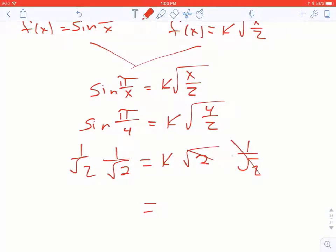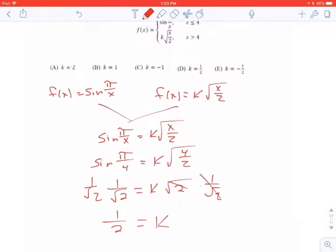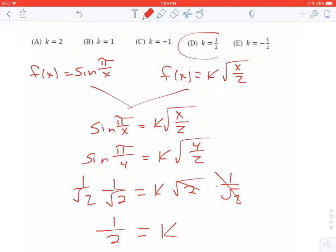On the right side, you're left with k. On the left, you end up with 1 over the square root of 2 times 1 over the square root of 2, which is 1 half. So that is answer D.